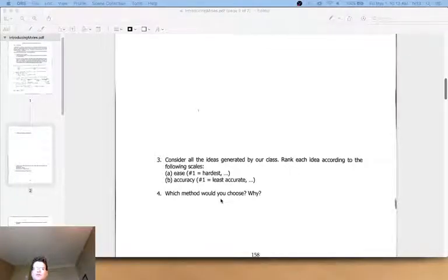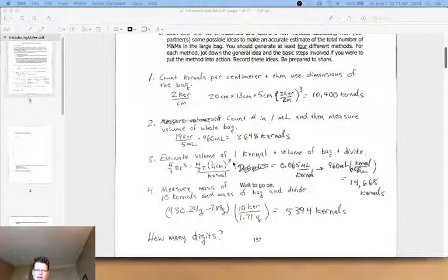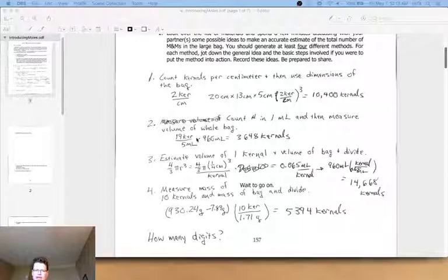So I think you can think through now which one is maybe the most accurate versus least accurate. Which method would you choose and why? I think the thing to think about is how certain can you be of how many digits in each one? In measuring the bag we've got it to two digits, maybe uncertainty in the unit's place. Same thing here, this is 5 milliliters, maybe it was 4 maybe it was 6 in the grad cylinder.